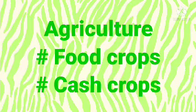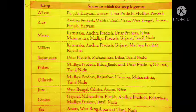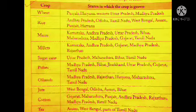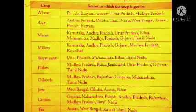Students, see this table carefully — it is in your textbook also. It lists the major food and cash crops of India. Wheat is mostly grown in Punjab, Haryana, western Uttar Pradesh, and Madhya Pradesh. Rice is grown in Andhra Pradesh, Odisha, Tamil Nadu, West Bengal, Assam, Punjab, and Haryana.